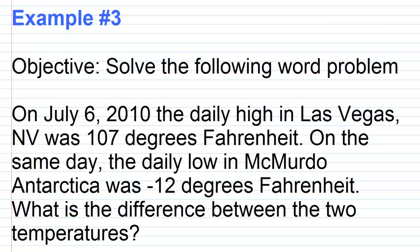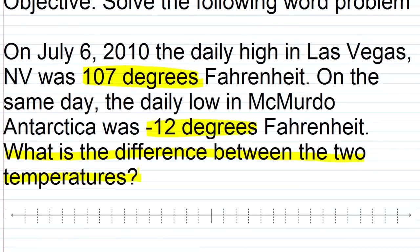This is a problem you need to think about for a minute. Let's go through and highlight some things that are important. The daily high in Las Vegas on this particular day was 107 degrees, and the daily low in McMurdo on this particular day is negative 12 degrees. The question, moving into step two: what is the difference between the two temperatures?